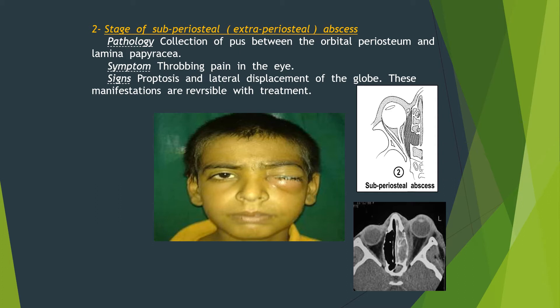In the stage of subperiosteal abscess, there is collection of pus between the orbital periosteum and the lamina papyracea. The pain will be throbbing pain in the eye, and by examination, proptosis and lateral displacement of the globe will be seen. These manifestations are still reversible with treatment.